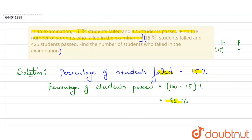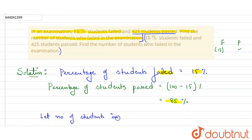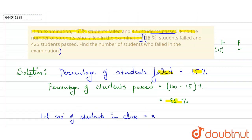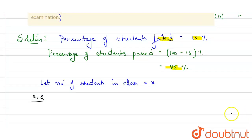Now it is given that 425 students passed the exam. Let the number of students in the class be x. Then according to the question, 85 percent of total students equals 425. This is our equation.